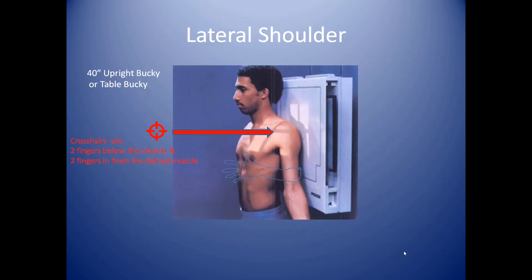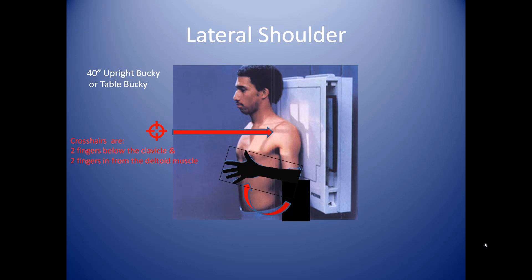Now for the lateral shoulder — it is exactly like the AP shoulder. This may very well be one of the easiest examinations you'll learn, simply because the only difference between an AP shoulder and a lateral shoulder is where you have your hand. Remember where we had the hand last time? Right here — we had a virtual hand right there. Let's imagine this guy folding his hand and putting it on his stomach. He brings it up on his stomach, not so much that the hand is reaching up into the x-ray field. This will rotate your humerus so it will be in profile, giving a good lateral examination. Our crosshairs are two fingers below the clavicle and two fingers in from the deltoid muscle. Hands on the stomach for the lateral, always.